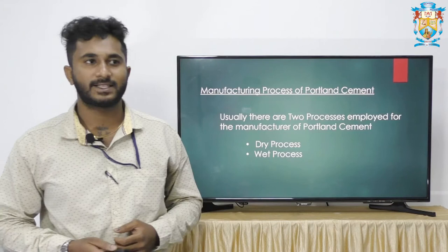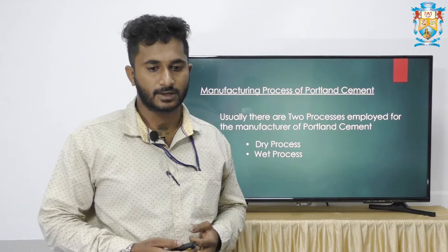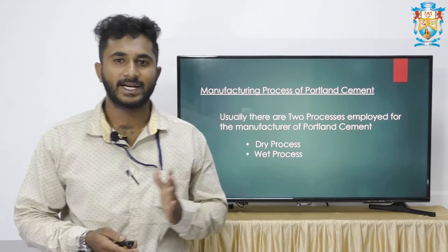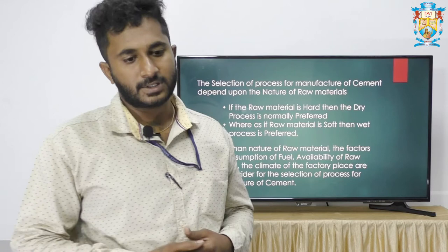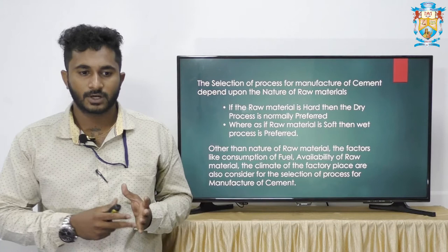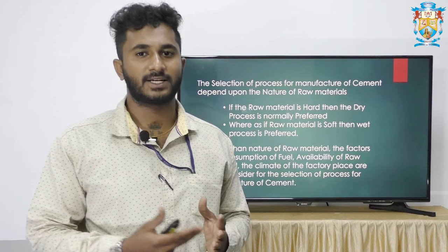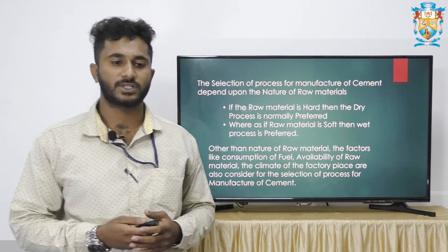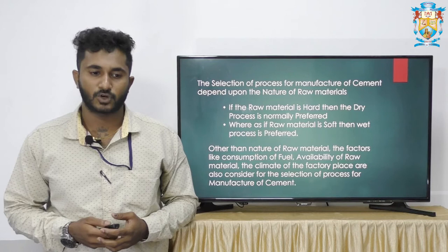Usually there are two processes involved: one is the dry process and the wet process. Out of these two processes, whatever the output we get is known as Portland cement. The selection of process for manufacturing of cement depends upon the nature of the raw materials — whether it is hard or soft. If the raw material is hard, the dry process is normally preferred; if the raw material is soft, the wet process is preferred.